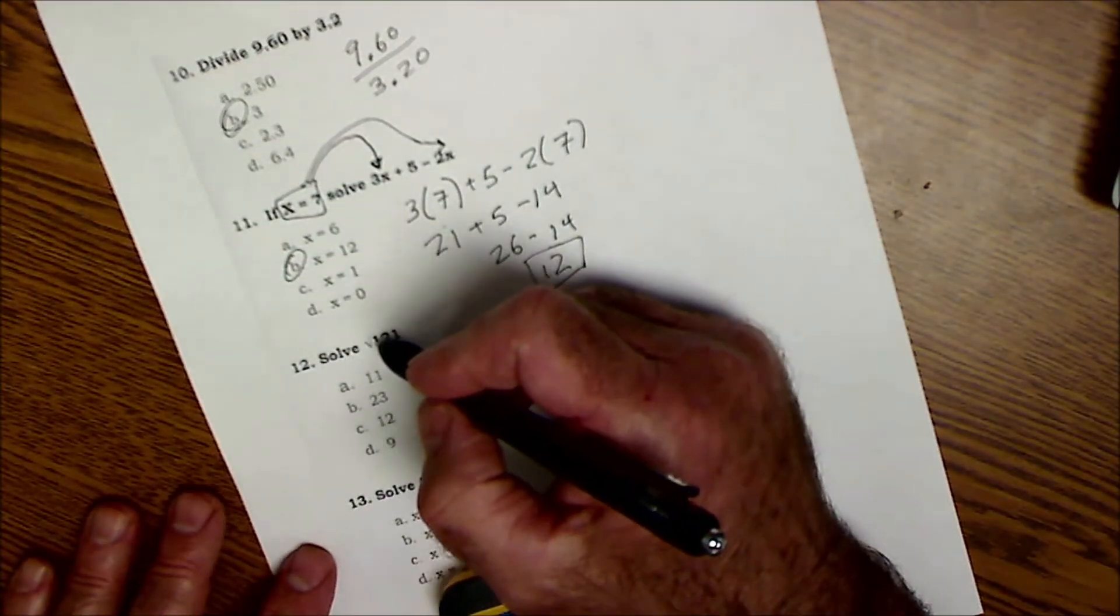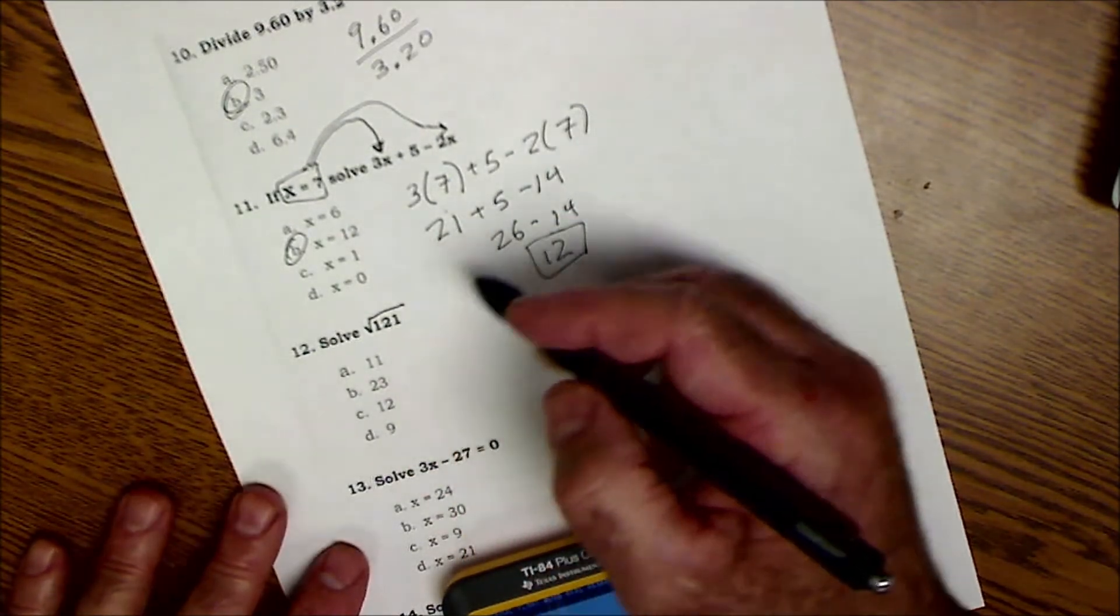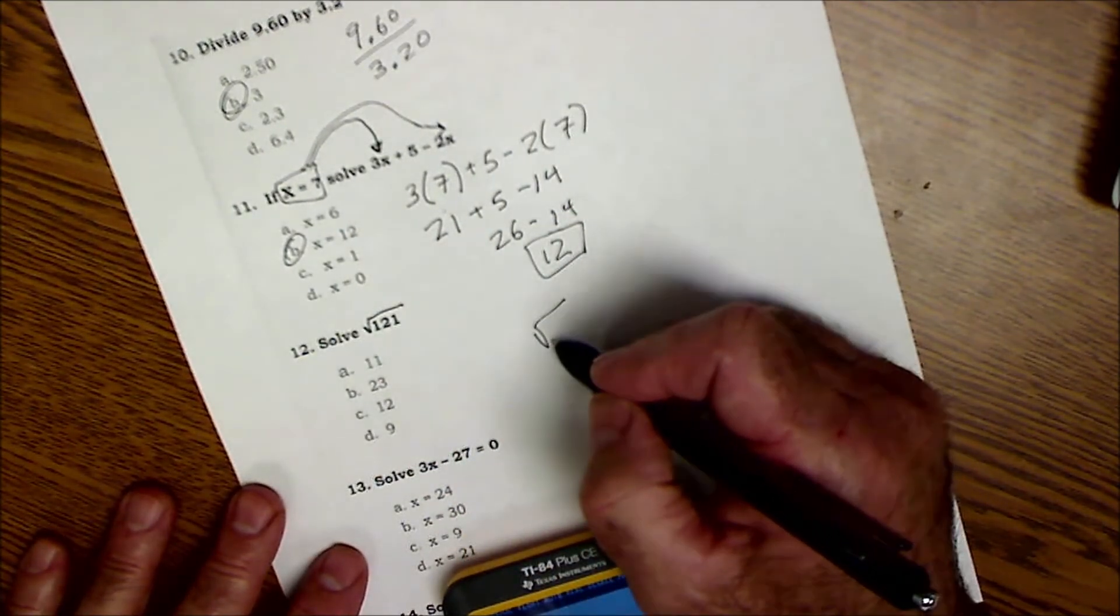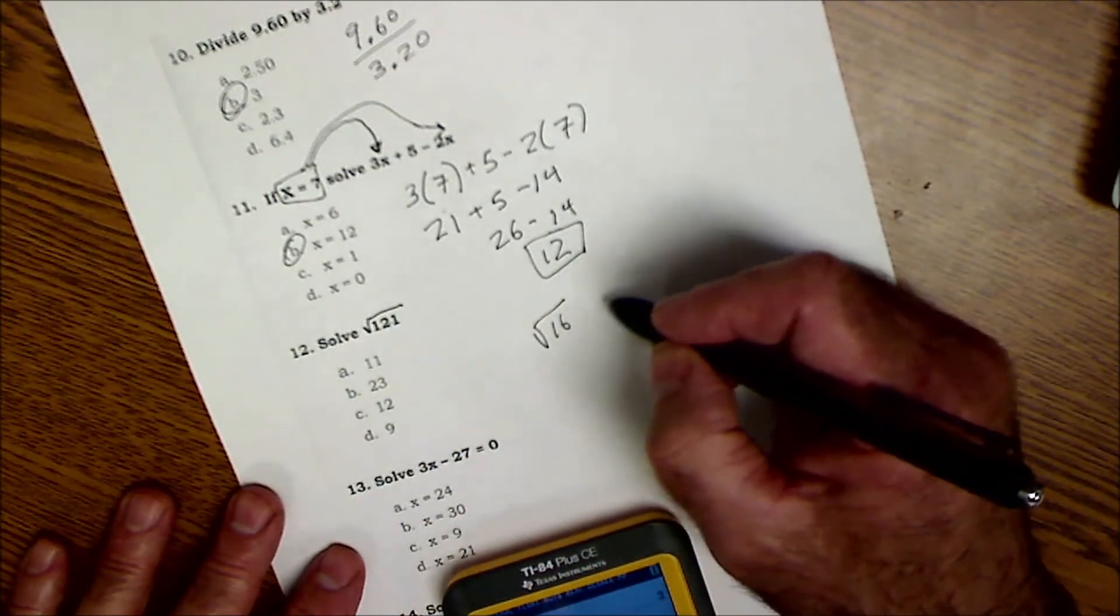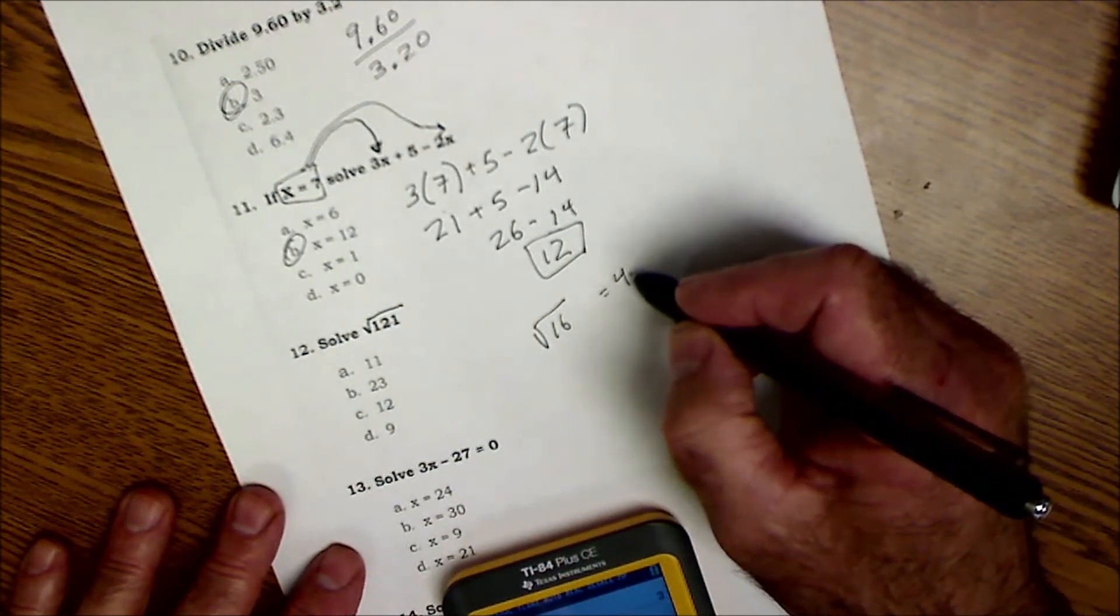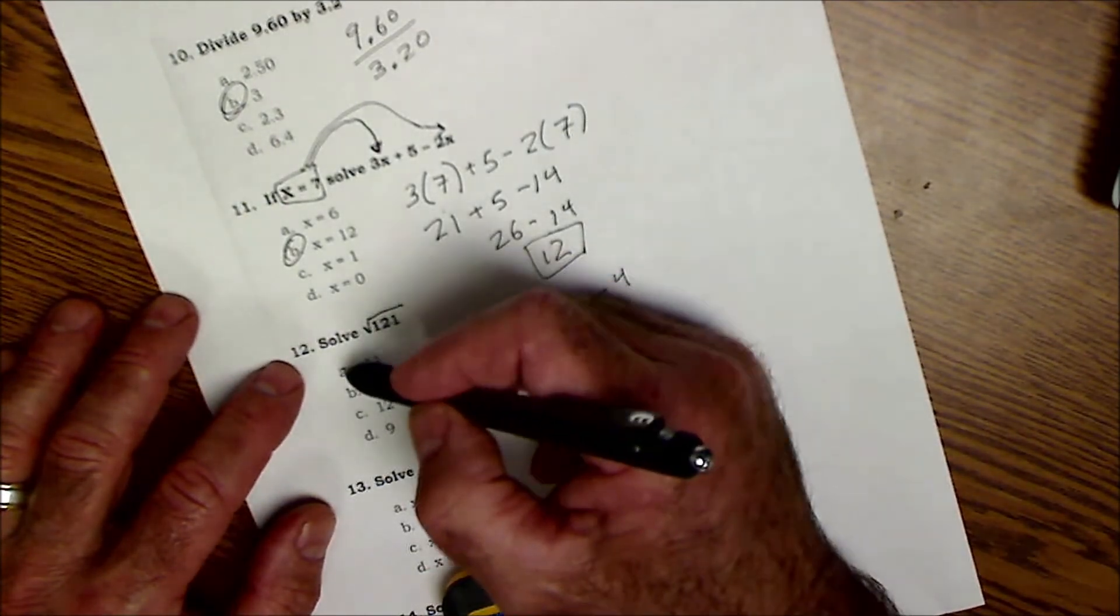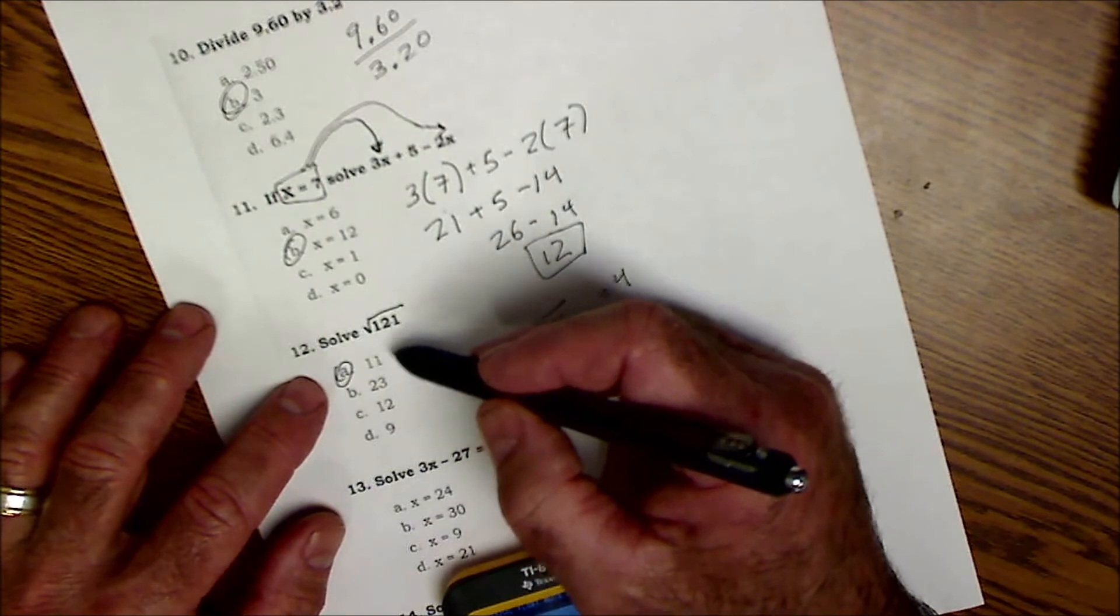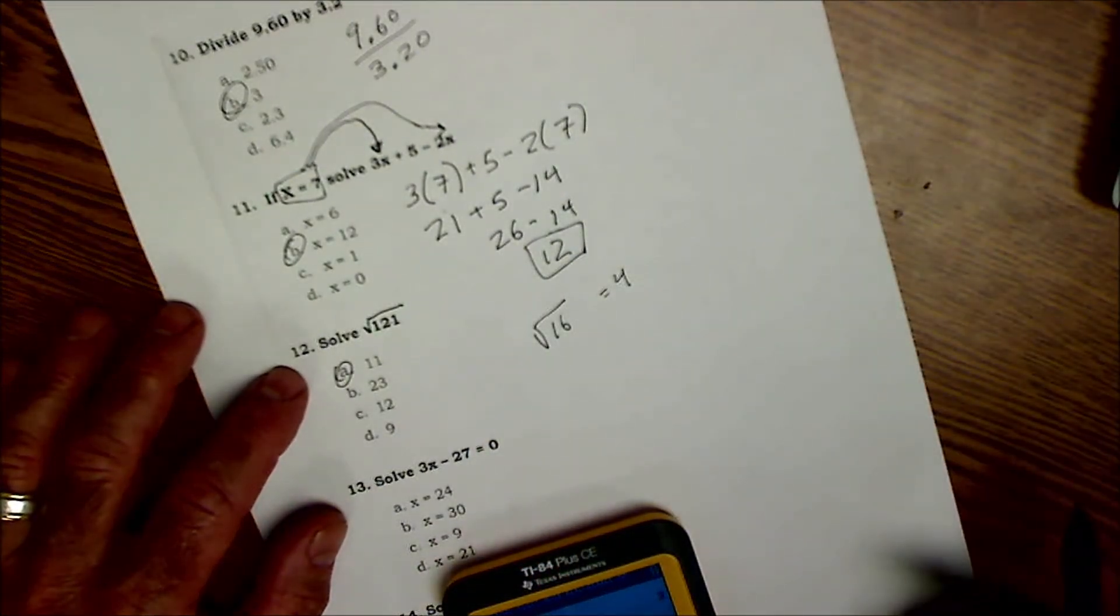Number 12 here is saying solve for the square root of 121. What this thing means is what times itself equals that number? So the square root of 16 is equal to 4, 4 times 4 is 16. So the square root of 121 is 11. 11 times 11 is 121. You just have to know your multiplication tables to get that.